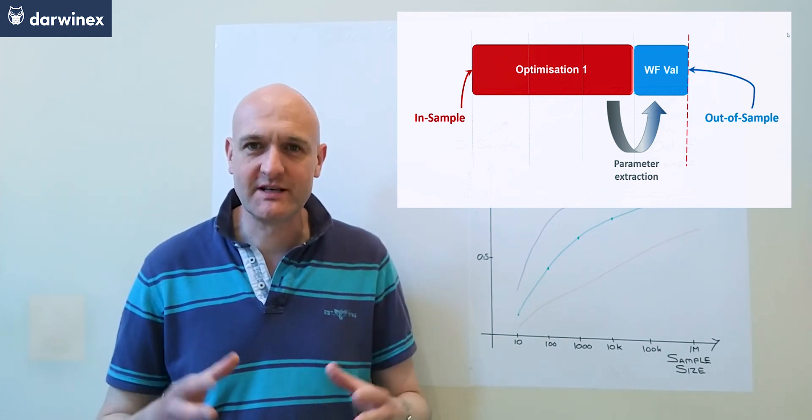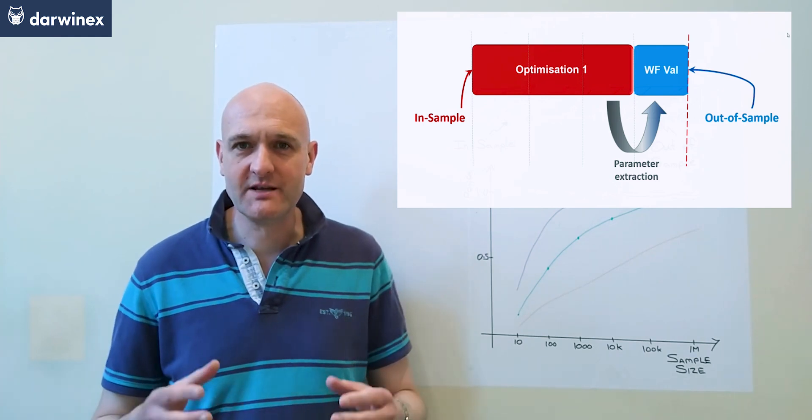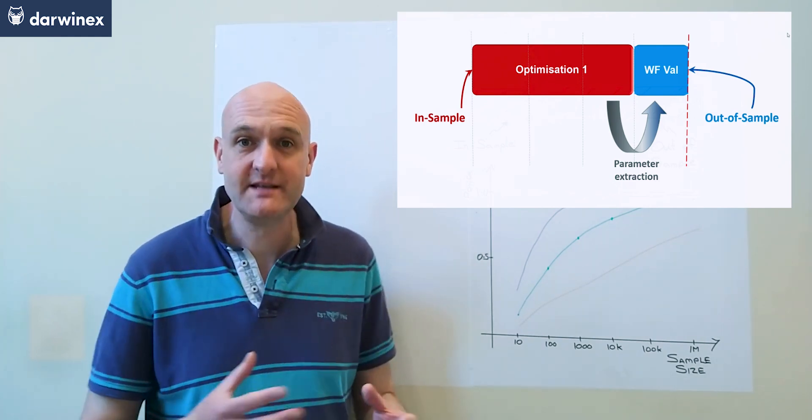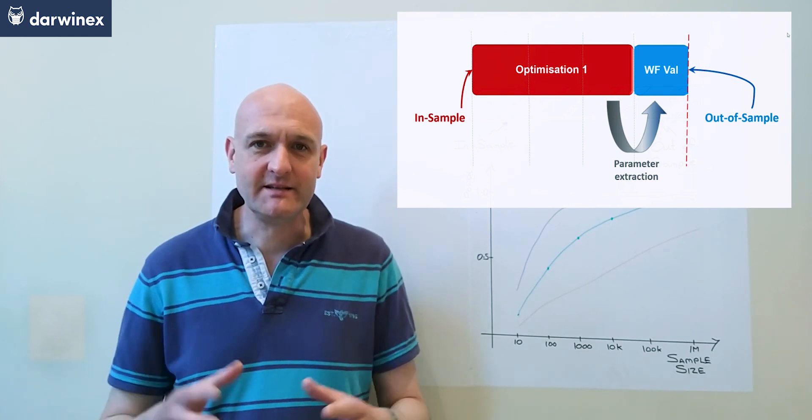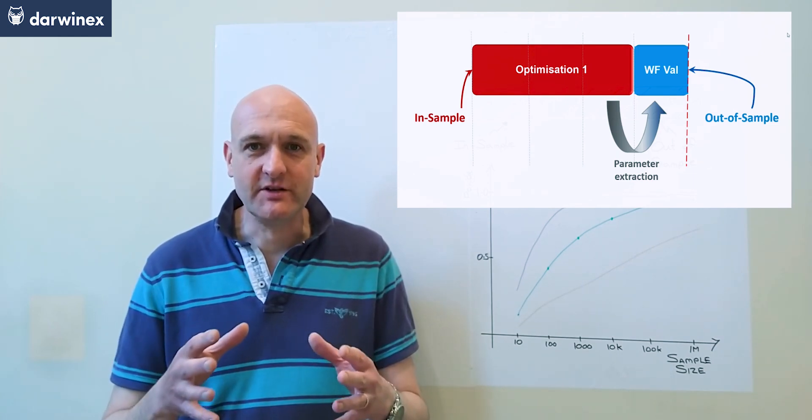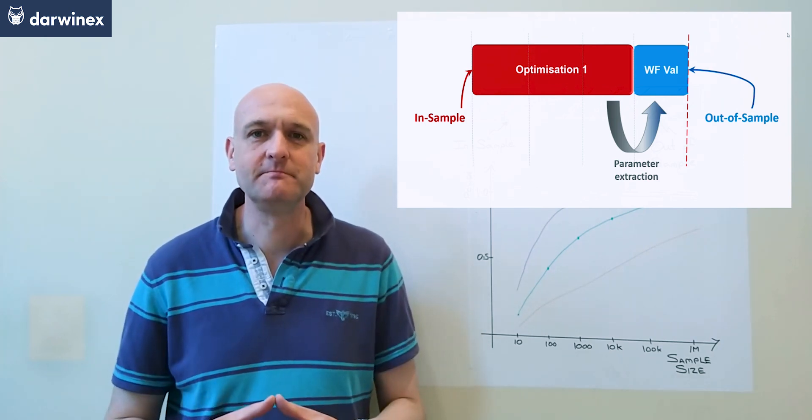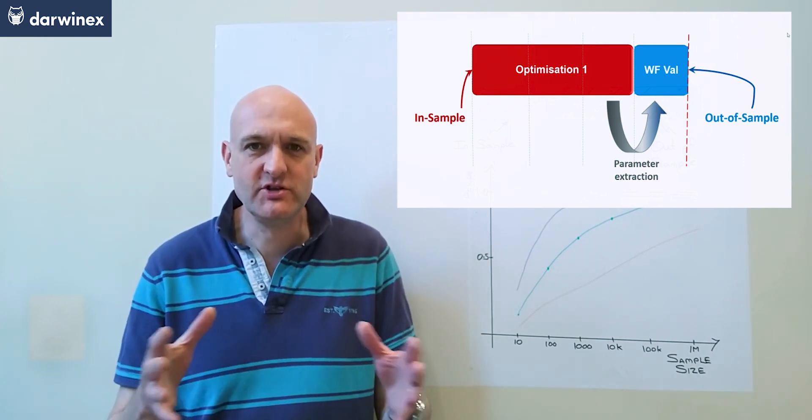Best practice does dictate that following an optimization of your parameter values using your in-sample data, we then validate those parameters on data that the parameters have never seen before, the out-of-sample data. Okay, so there's nothing new there,